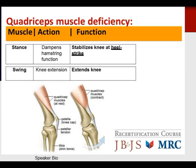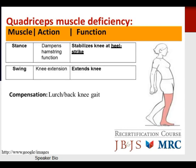Regarding quadriceps muscle deficiency: the quadriceps is involved in heel striking, knee extension, and stabilizing the knee during stance. It dampens hamstring function and stabilizes the knee at heel strike; during swing phase, knee extension extends the knee. The compensation for quadriceps deficiency is a lurch back or knee gait — sometimes called a quadriceps avoidance gait — as the individual cannot appropriately extend their knee, and the compensatory effort is to lurch back to balance the center of gravity.